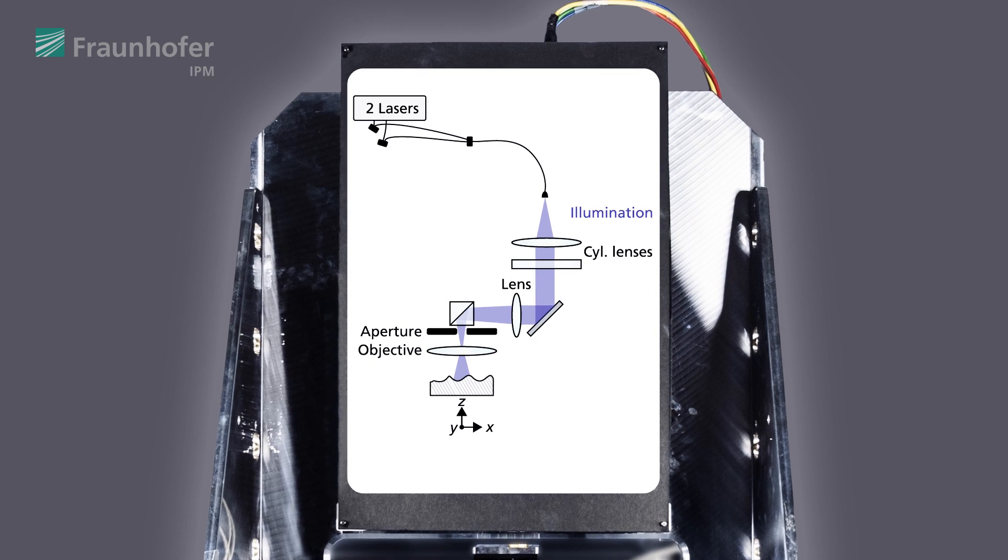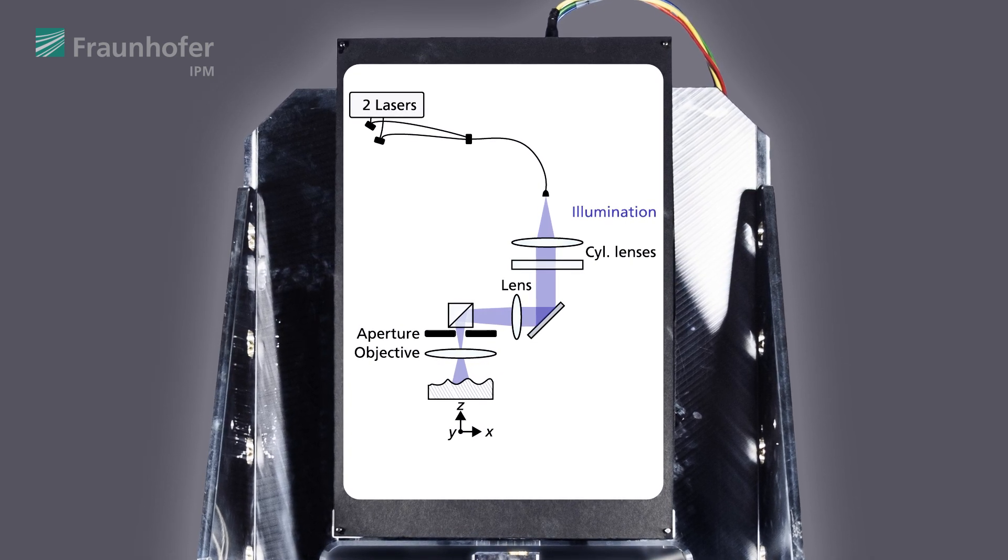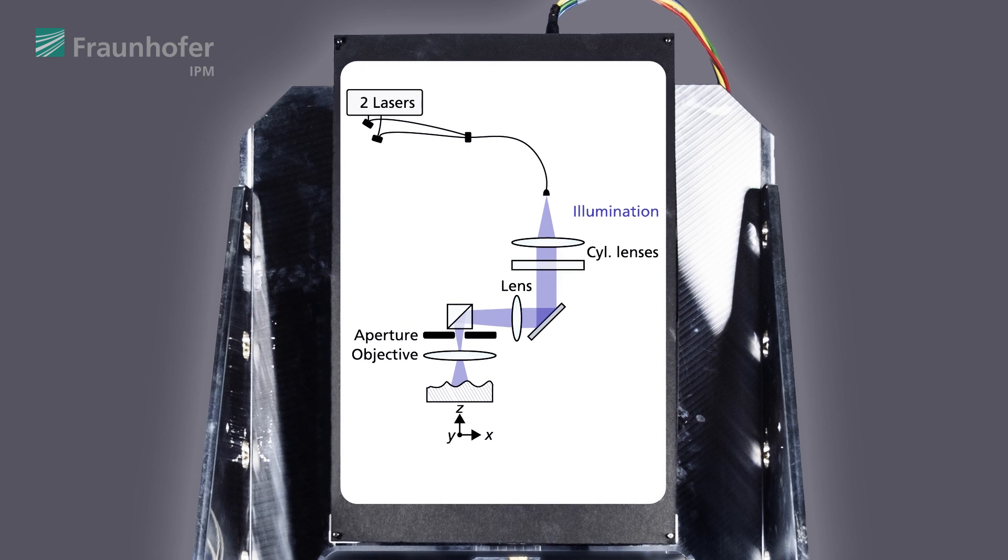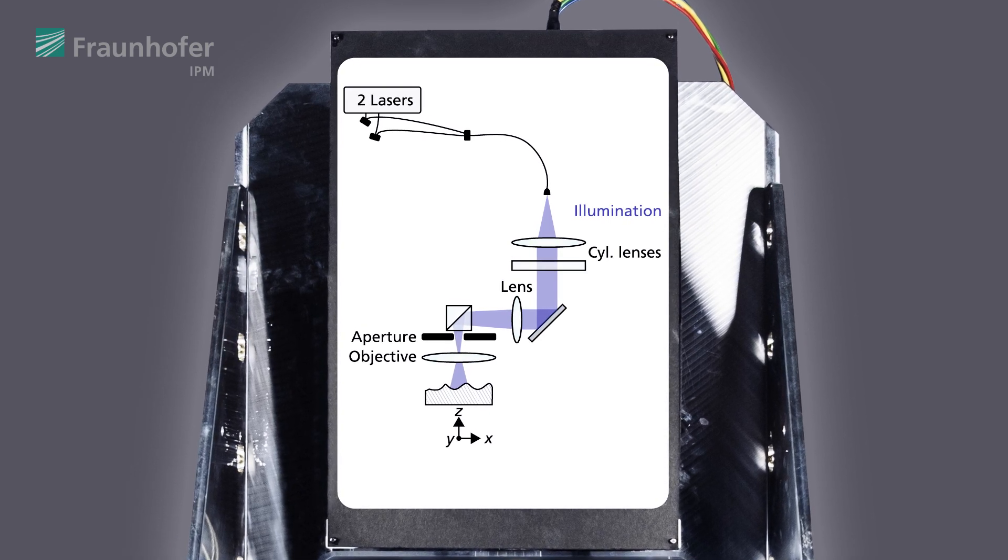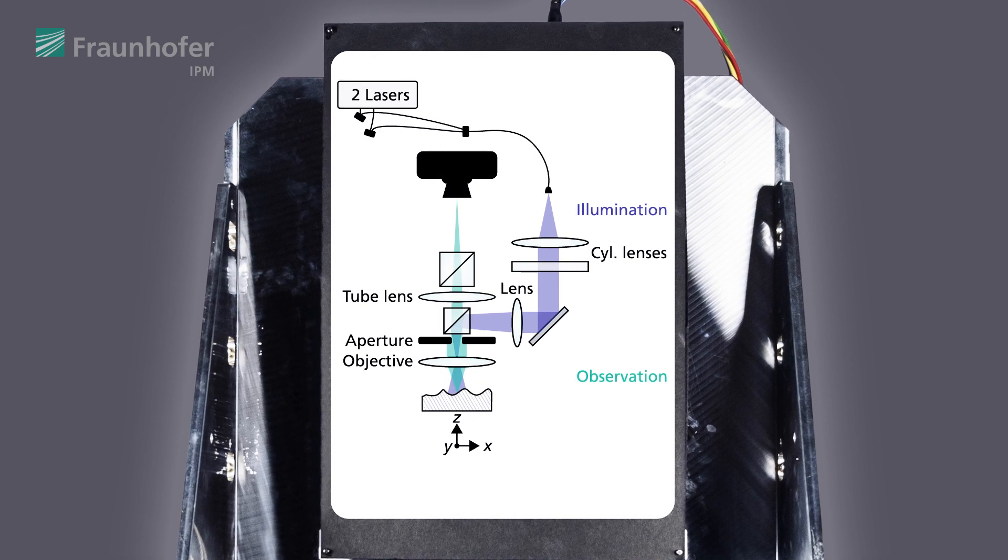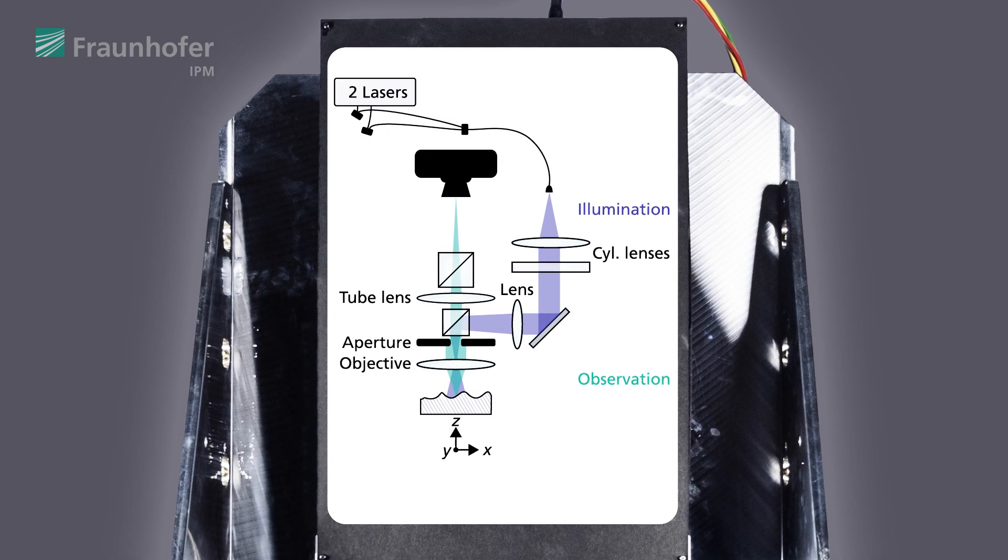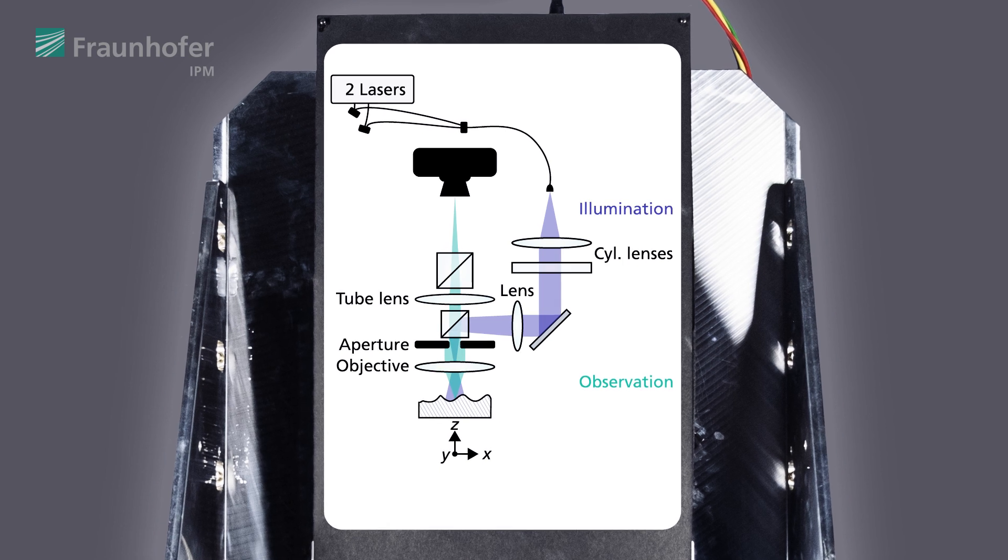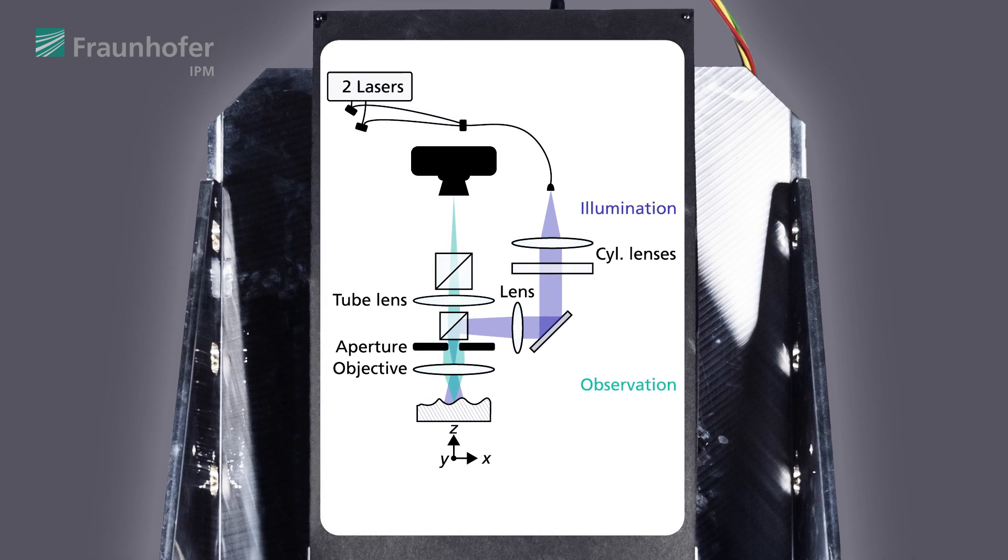A normal lens focuses the light through the aperture into the 10 times microscopic objective so that the object is illuminated through the objective. The light is reflected back by the object, passes the objective and the aperture again and is then imaged by a tube lens onto the camera.